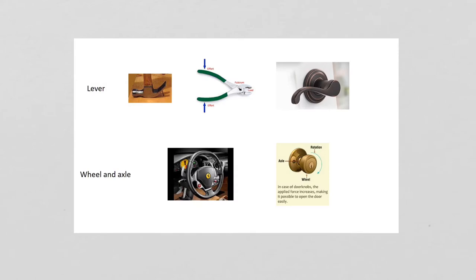Here are some examples of simple machines. A claw hammer is a lever when used to extract a nail from a wooden board. A pair of pliers is also a lever. The handle on a door is a lever as well. Two examples of a wheel and axle would be a car wheel and also the knob on a door.